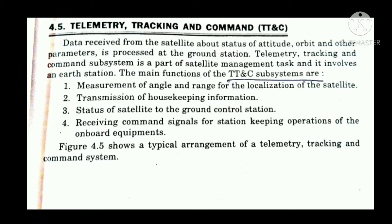Data received from the satellite about its status of attitude, orbit and other parameters is processed at the ground station. The TTC subsystem is a part of satellite management and involves an earth station. The main functions are: measurement of the angle and location of the satellite, transmission of housekeeping information, status of the satellite to the ground control station, and receiving command signals for station-keeping operation of onboard equipment.